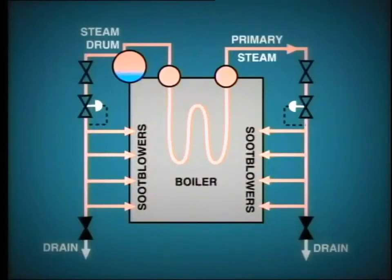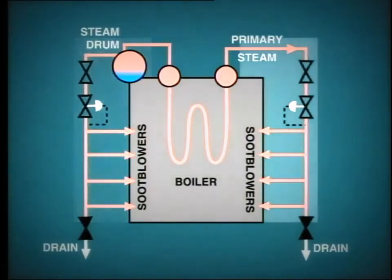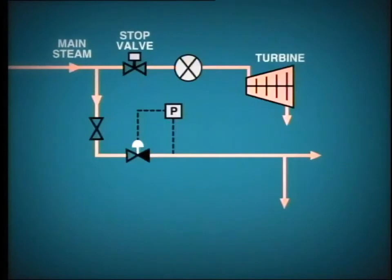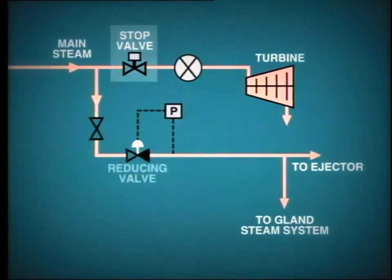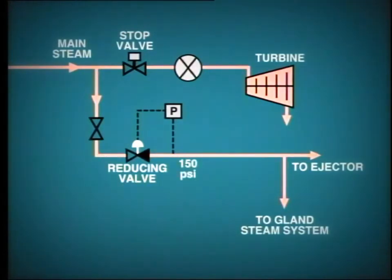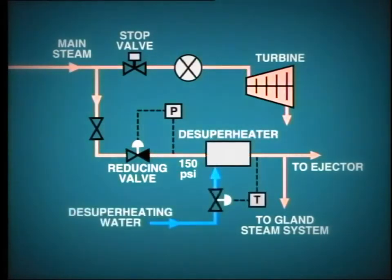Soot-blowing steam for the boiler is usually taken directly from the boiler itself, either from the drum or the first stage of superheat. For the turbine steam auxiliaries, such as the air removal steam ejector and gland sealing steam, a direct supply is usually taken from the main steam line before the stop valve. This high-pressure steam then passes through a reducing station to bring the pressure down to, say, 150 psi.